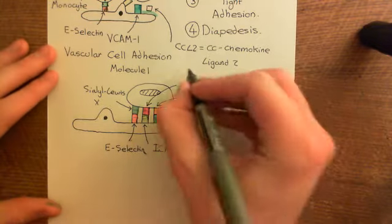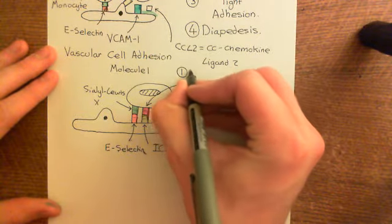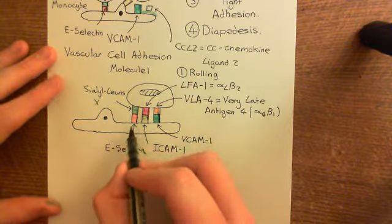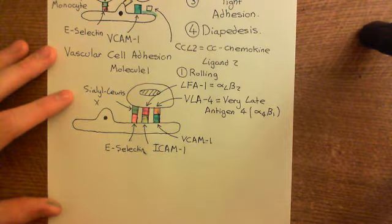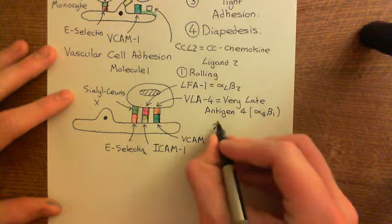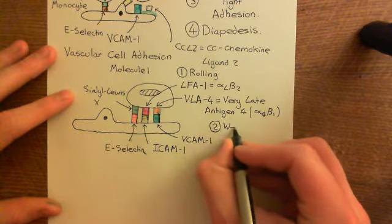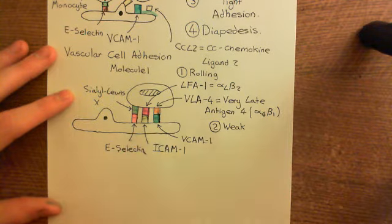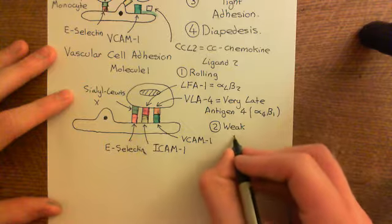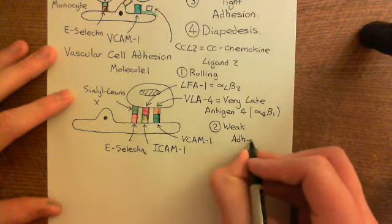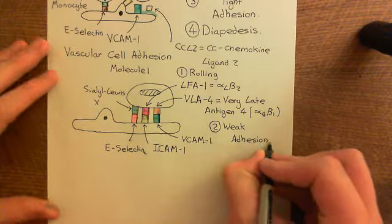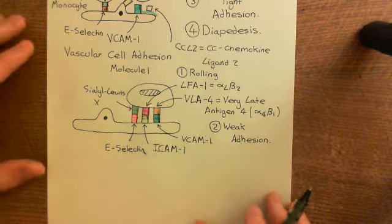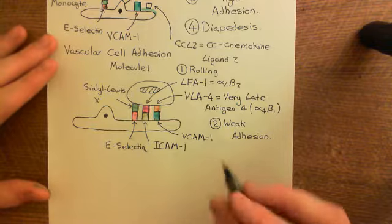To summarize so far: the first process in monocyte extravasation is rolling, driven by sialyl Lewis X on the monocyte and E-selectin on the endothelium. The second process is weak adhesion, involving ICAM1 and VCAM1 on the endothelial cell interacting with LFA1 and VLA4 respectively on the monocyte. These integrins are not yet activated, so this interaction remains weak but does hold the monocyte to the endothelium.